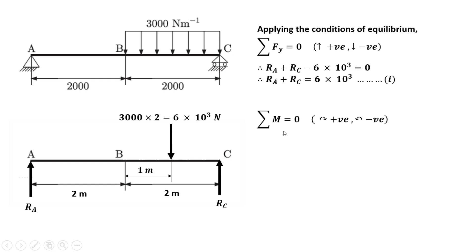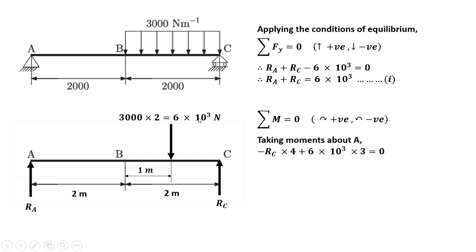Applying the condition that summation of moments equals zero, with clockwise positive and anticlockwise negative, and taking moments about point A: Rc produces an anticlockwise moment so it is minus Rc into 4. The point load produces a clockwise moment: 6 × 10³ into 3 (since the distance from A is 1 plus 2 equals 3 meters). Therefore Rc into 4 equals 6 × 10³ into 3, giving Rc equal to 4500 Newton.